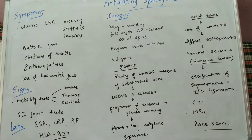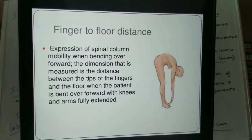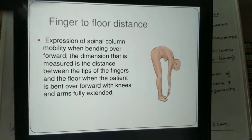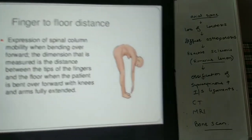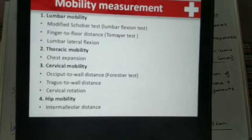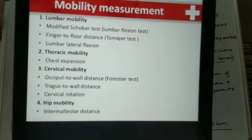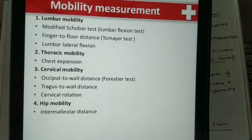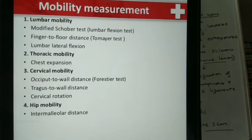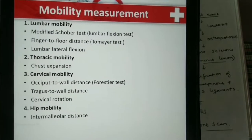The other test used for mobility of the lumbar spine is the finger-to-floor test: we ask the patient to bend forward without bending the knees and check the finger-to-floor distance. For thoracic mobility, we have chest expansion. The values of chest expansion are defined for every age group, but normally chest expansion is more than 5 cm.